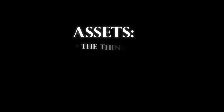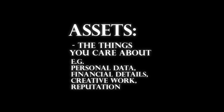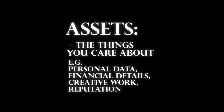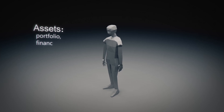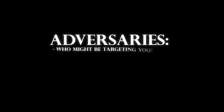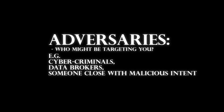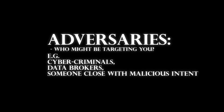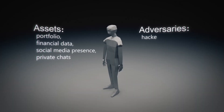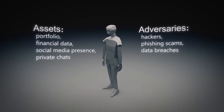Assets — those are the things that you care about: your personal data, finance details, creative work, and even your reputation. For Alex, it's his portfolio, financial data, social media presence, and private chats. Adversaries — who might be targeting you? It could be cybercriminals, data brokers, or even someone close to you with malicious intent. For Alex, it's hackers targeting freelance income, phishing scams, and data breaches from platforms that Alex uses daily.